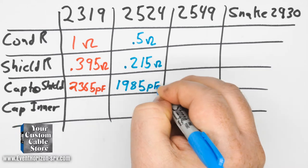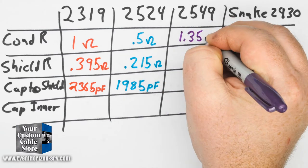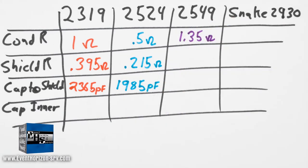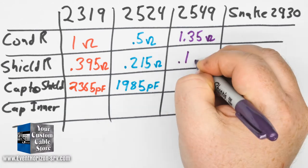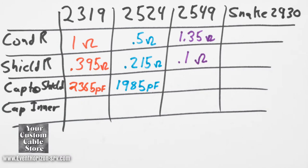Mogami 2549: one of the center conductor resistances is 1.35 ohms, the shield resistance is 0.1 ohms, the capacitance to shield is 1300 picofarads, the capacitance between the two center conductors is 155 picofarads.